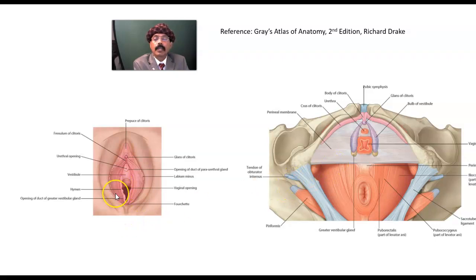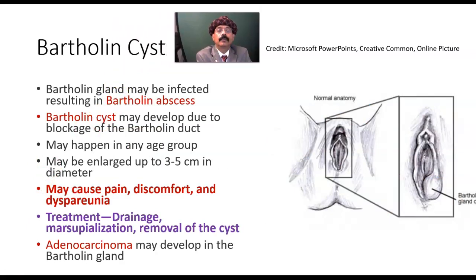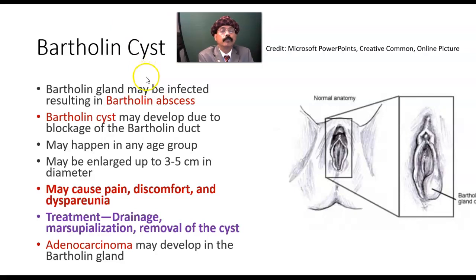Now we'll discuss the Bartholin cyst. A cyst is a localized collection of fluid. An abscess is a collection of pus. A cyst may become infected and lead to abscess formation.